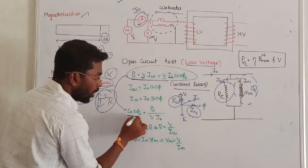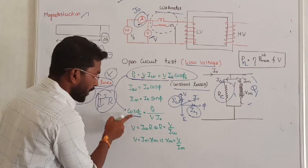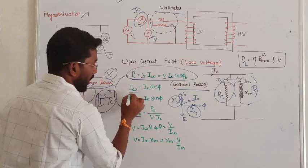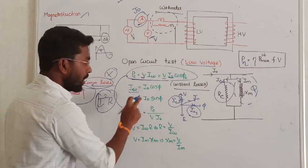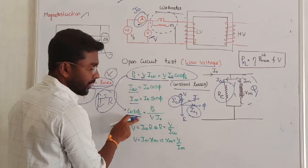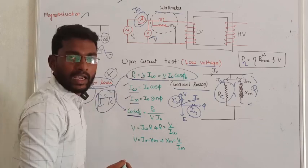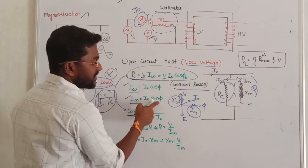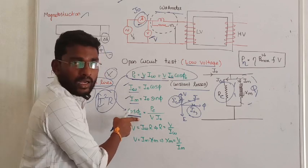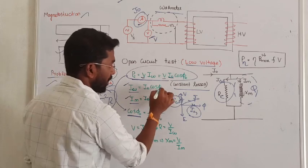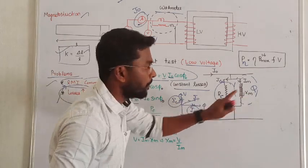From these readings we can find the no-load power factor: cos-phi equals Pc divided by (V times I0). Then we can find Iw equals I0 times cos-phi, and we can also calculate the magnetizing current Im equals I0 times sin-phi. From cos-phi and I0 we can find the value of phi, and from that we determine the winding loss current and magnetizing current.